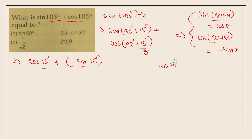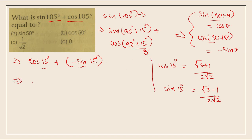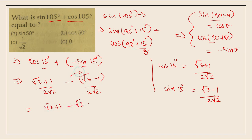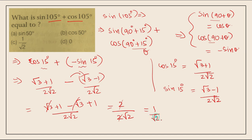We substitute the standard values: cos15° equals (root 3 plus 1) by 2root2, and sin15° equals (root 3 minus 1) by 2root2. So cos15° minus sin15° equals (root 3 plus 1) by 2root2 minus (root 3 minus 1) by 2root2. Opening the bracket, we get root 3 plus 1 minus root 3 plus 1 all over 2root2. The root 3 terms cancel, giving 2 by 2root2, which simplifies to 1 by root2.